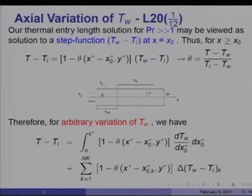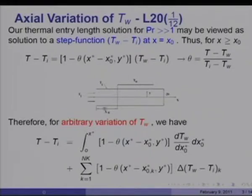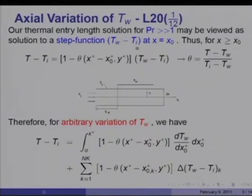That solution was obtained for T equal to T_w from x equal to 0, but today I am going to consider the case of heat transfer beginning from x equal to x_naught. Before that, the wall temperature is the same as the inlet fluid temperature T_i. In fact, we can view our earlier solution of lecture 18 as a step function in T_w minus T_i at x equal to x_naught.